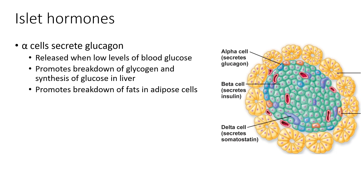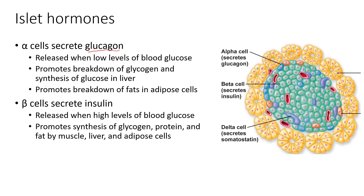Alpha cells secrete glucagon, one of those polypeptide hormones. Glucagon is released when levels of blood glucose are low — it's a signal to start breaking down glycogen and synthesizing glucose in the liver. Essentially, when energy levels are low, glucagon is secreted to mobilize stored energy. Glucagon also promotes the breakdown of fats in adipose cells for the same reason, since fats are used as energy storage and glucagon signals that energy needs to be used.